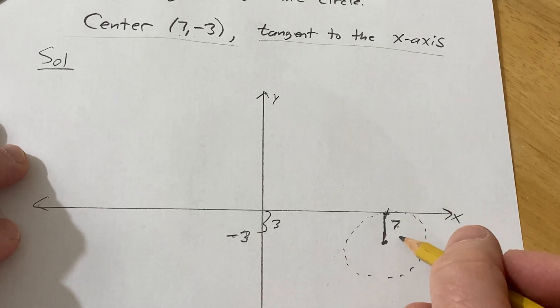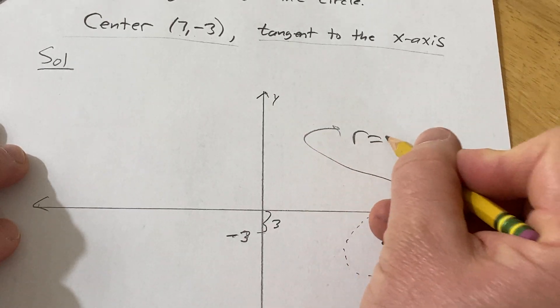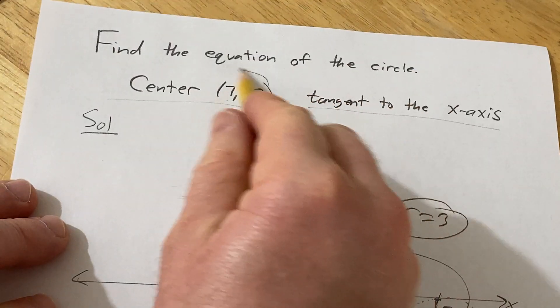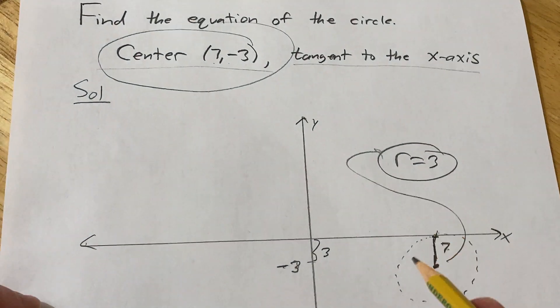Therefore, the radius of the circle is 3 from the picture. So now we have the radius. We're given the center. So now we can use the equation of a circle.